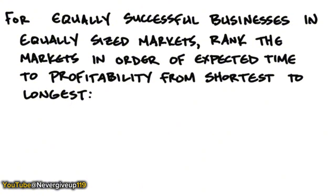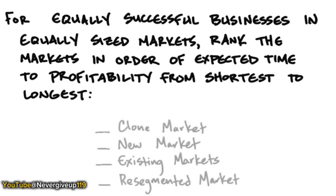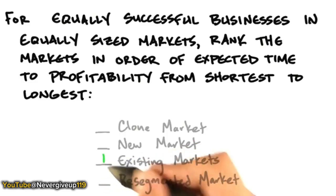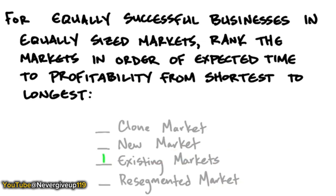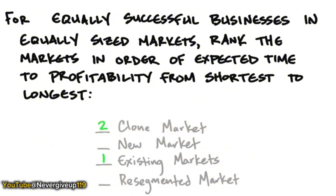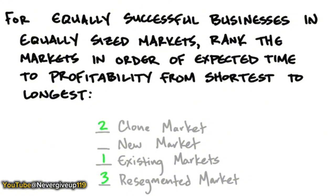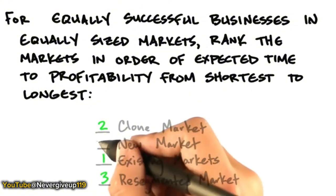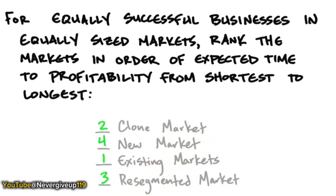Market type gives us a handle on expected time to profitability from shortest to longest. An existing market offers the soonest path to profitability if you've matched market needs. A clone market — copying a U.S. business model in a foreign country — is probably second closest to profitability because you know the market exists. Resegmented market falls somewhere in between. The longest time to profitability is a new market — you have a vision, you understand what the future might look like, but the market just hasn't adopted yet, and that might take years.